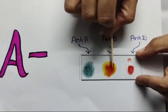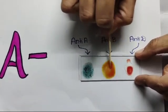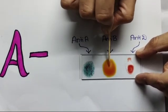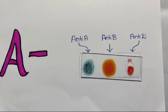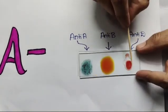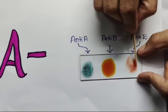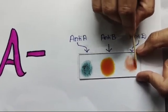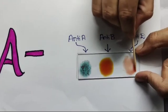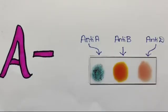No clotting is seen in anti-D, which means Rh antigen is absent. It is a negative blood group. Hence, the blood group is A negative.